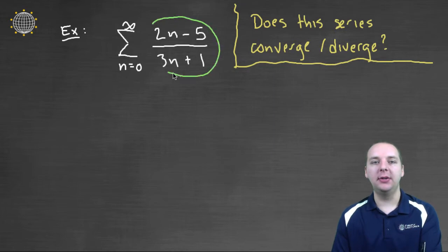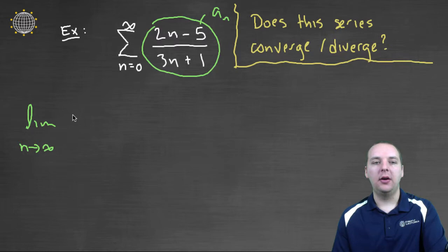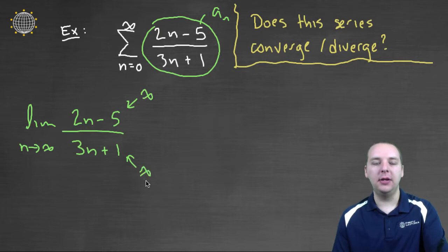Because if you consider this guy here to be your a sub n, then let's take the limit as n goes to infinity of two n minus five divided by three n plus one. This limit would go to infinity over infinity. And so one thing that we've studied lately, recently in our course, is L'Hopital's rule. Because if you get an indeterminate form, if you get infinity over infinity, you can differentiate the numerator and denominator and then retake the limit.